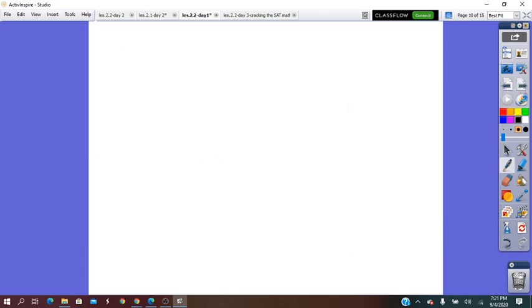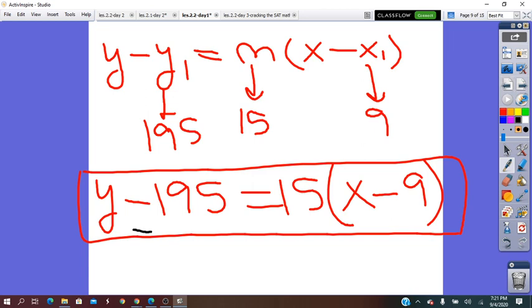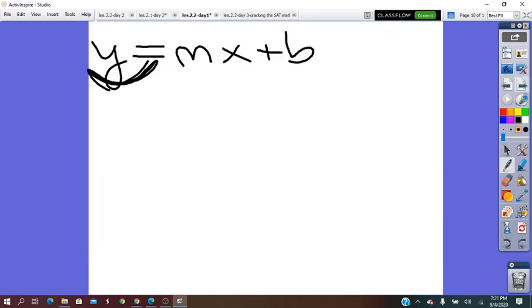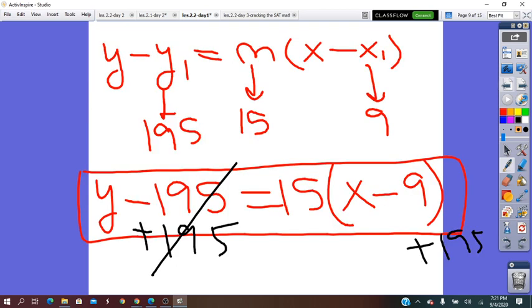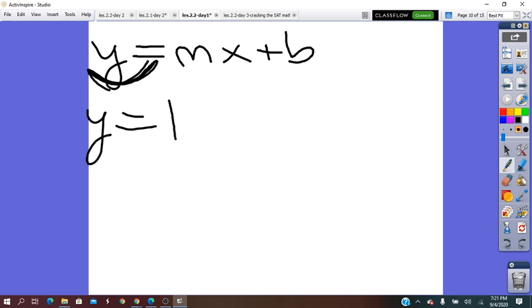We know that the slope intercept form is Y equals M plus B. So, I will solve for Y plus 195 on both of the sides. It will be Y equals, distribute the 15, so 15X minus 15 times 9, it's 135 plus 195.